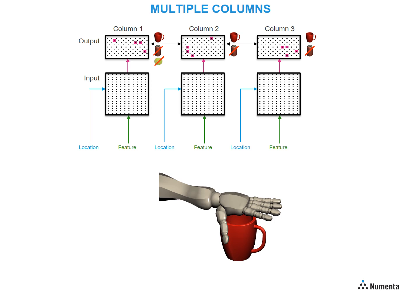By using three fingers at a time, the network can recognize the object with fewer touches compared to a single column. In the brain, there are usually many columns operating in parallel, and inference can often occur with a single grasp, or in the case of vision, with a single glance.